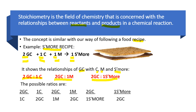So the possible ratios are: two graham crackers to one chocolate, one chocolate over two graham crackers, two graham crackers over one marshmallow, and two graham crackers to one s'more — or one s'more over two graham crackers. These ratios, or conversion factors, come from the recipe.